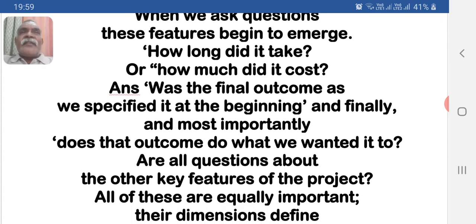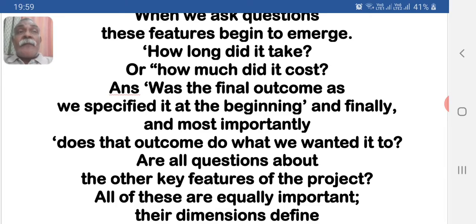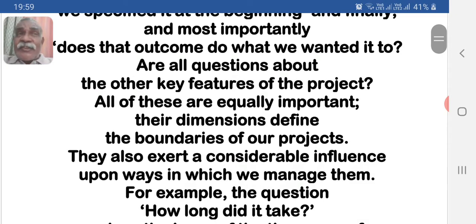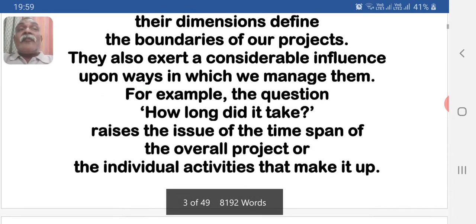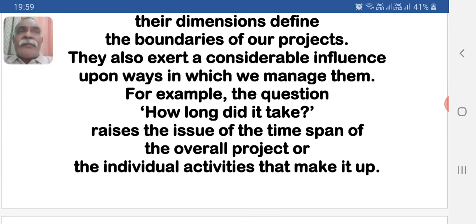How long did it take? Or how much did it cost? Was the final outcome as we specified it at the beginning? And finally, and most importantly, does that outcome do what we wanted it to? All of these are questions about the other key features of the project. All of these are equally important. Their dimensions define the boundary of our project. They also exert a considerable influence upon the ways in which we manage them.